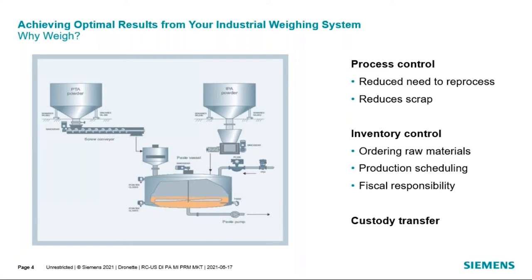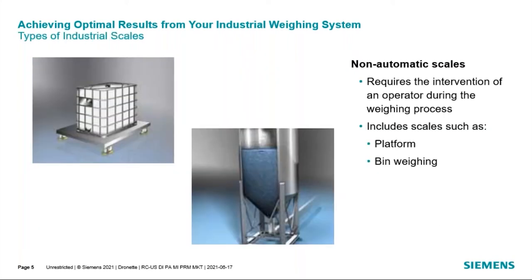Billing customers for bulk materials is typically done based on weight. Looking at the different types of industrial scales, generally speaking they are categorized into three groups: non-automatic scales, automatic scales, and continuous scales. Non-automatic scales require some intervention from the operator or the control system to complete the weight measurement. Examples include platform scales and bin weighing systems.